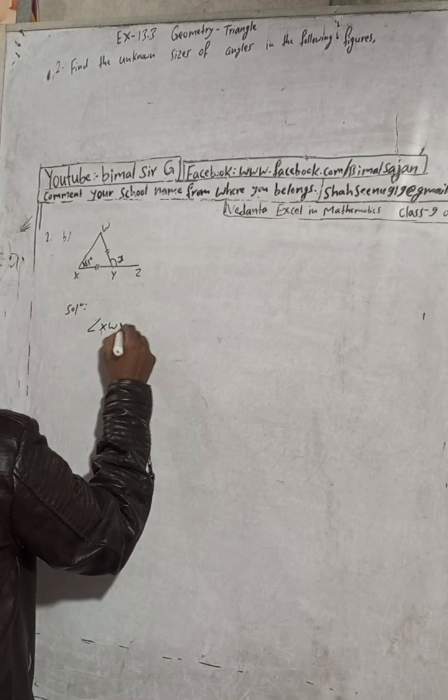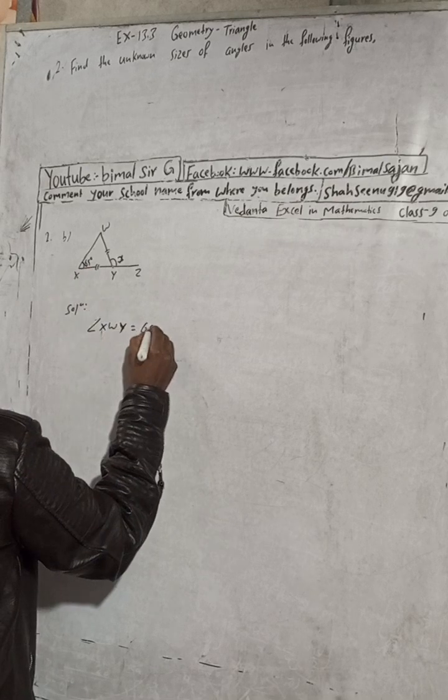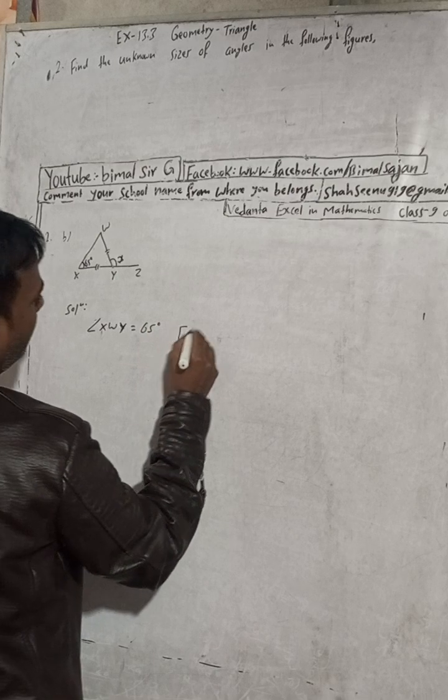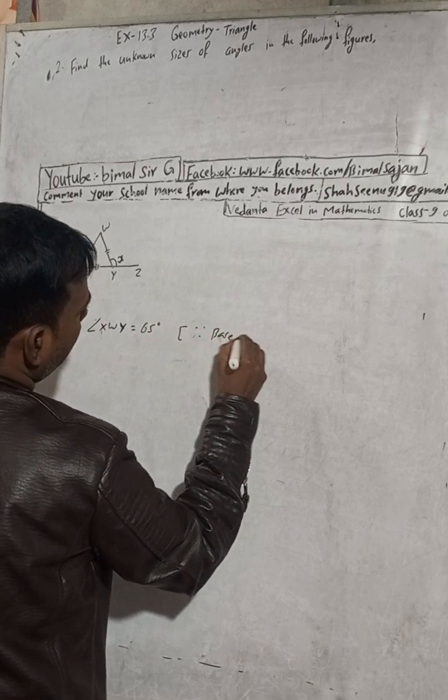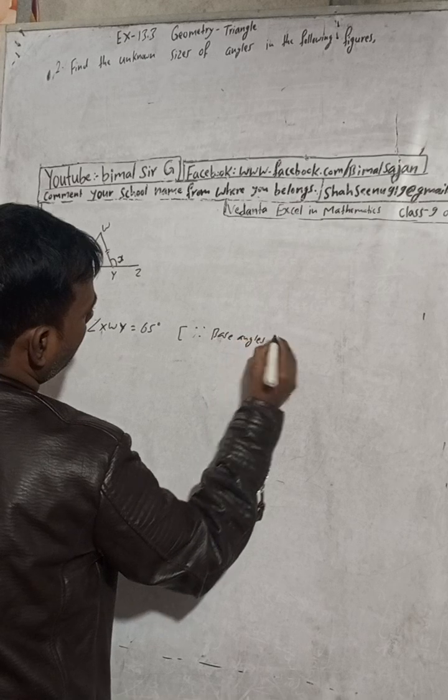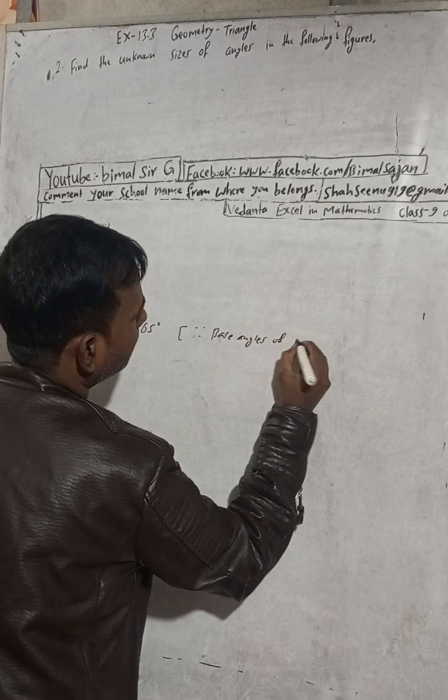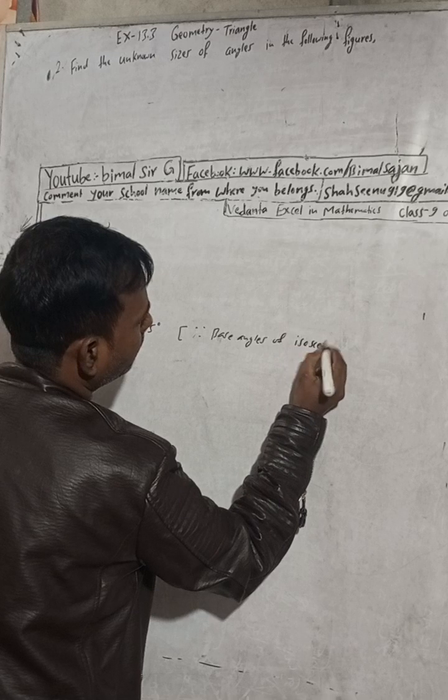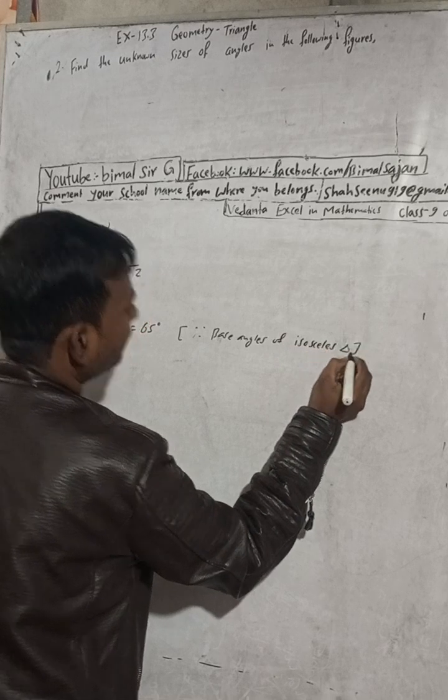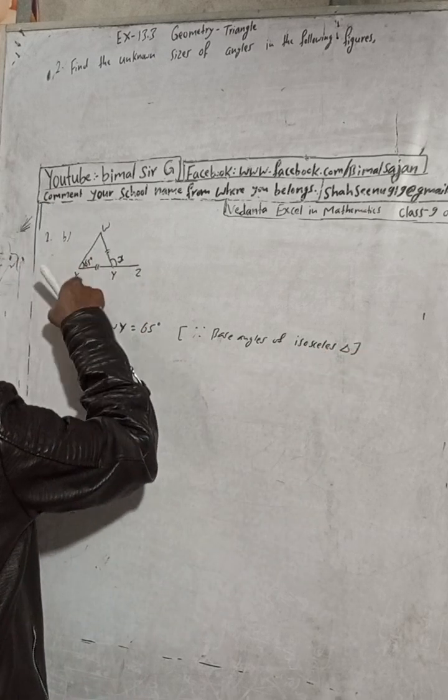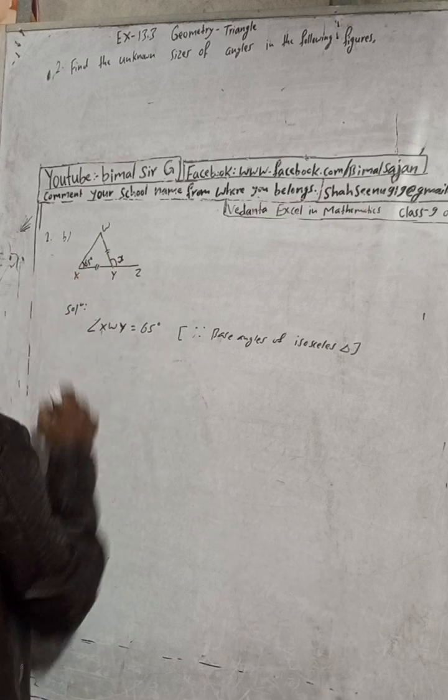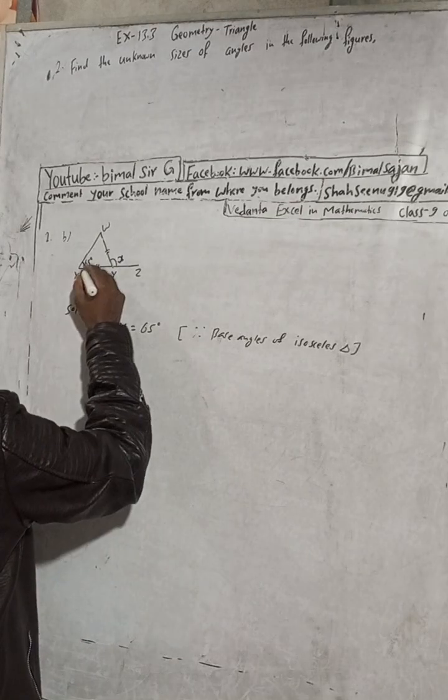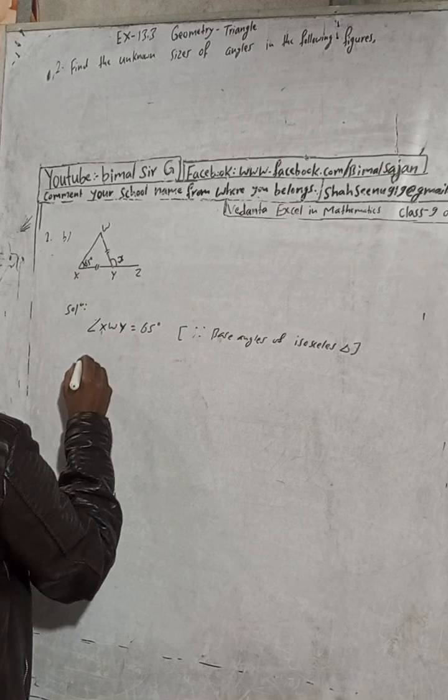...to 65 degrees. The base angles of an isosceles triangle are equal. This angle equals this angle, and this angle plus this angle equals this angle.